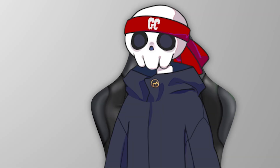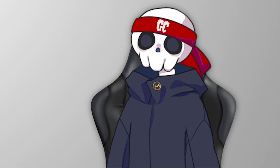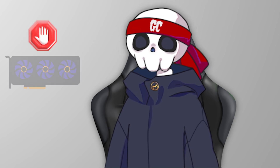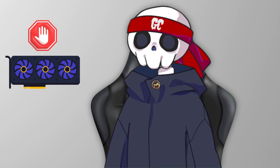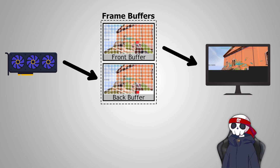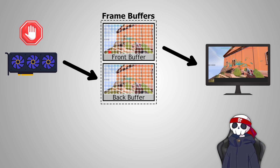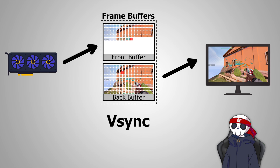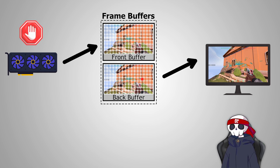To solve this synchronization issue, we have V-Sync, which synchronizes your monitor and your GPU. Basically, it stops your GPU from producing new frames until your monitor fully displays the last frame. So your GPU renders a new frame, but if your monitor is still displaying the last frame, the GPU will wait until the monitor finishes, then changes buffers and starts rendering a new frame.